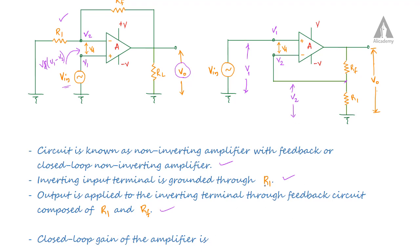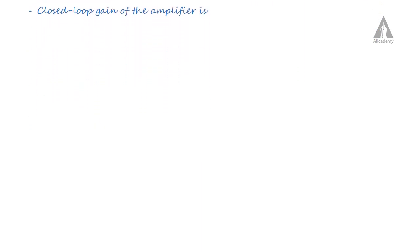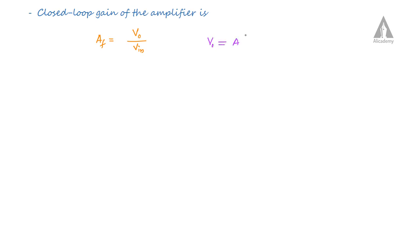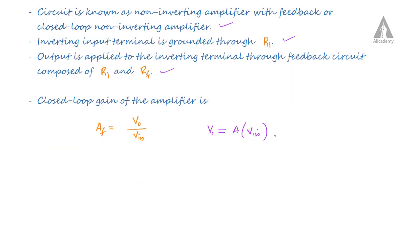The closed-loop gain of the amplifier AF is equal to V0 divided by VIN. Now V0 is equal to A into VIN, and the operational amplifier amplifies the voltage difference. So we can write V0 is equal to A into V1 minus V2.